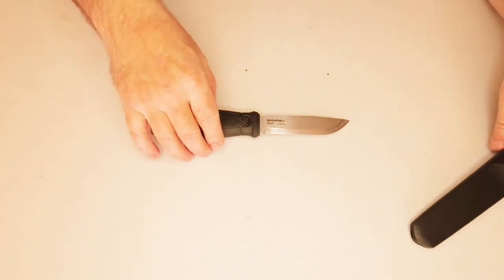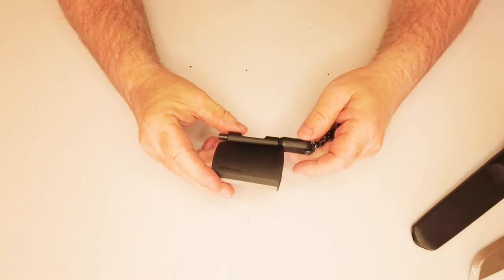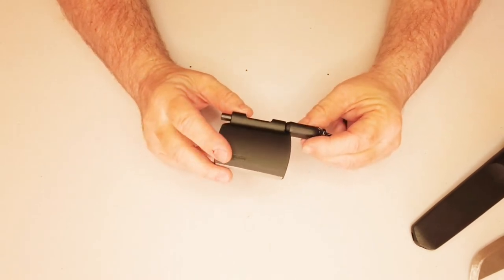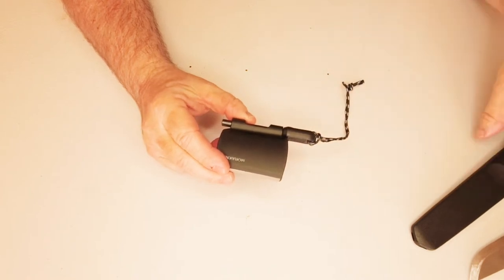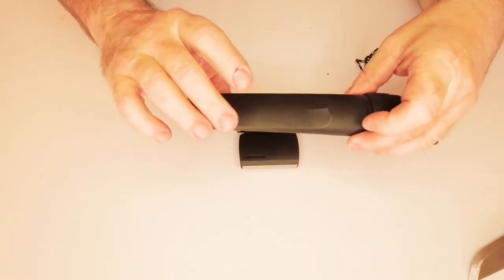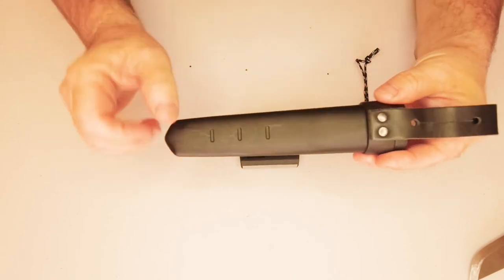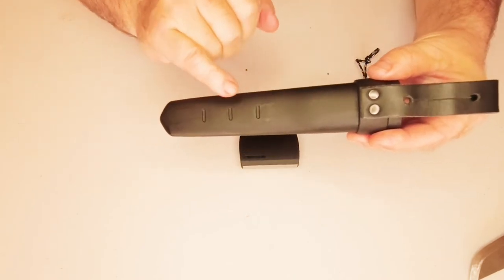So now, let's put that to one side. And this is what I bought as soon as I was able to here in Australia. It's the Morakniv survival kit for the Garberg and the Kansbol. So the Garberg and the Kansbol have the same sheath, same shape, just different colors. And you can see on the back here, and I'll show you what they're for in a moment.